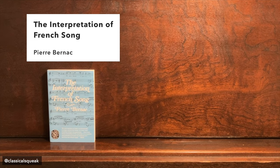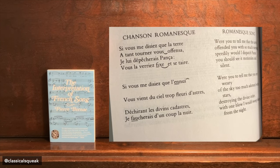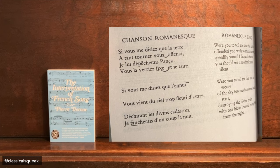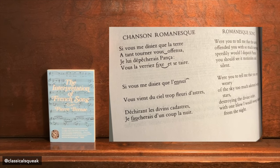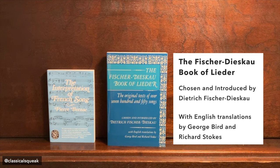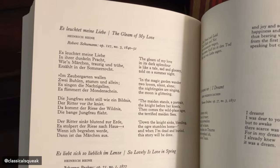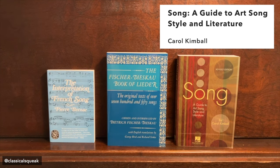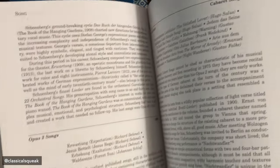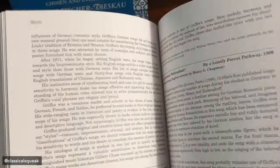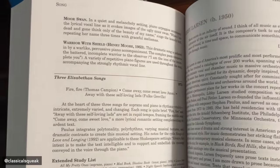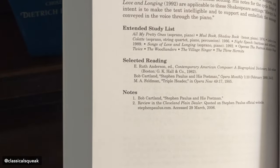The Interpretation of French Song by Pierre Bernac has summary texts and translations. What I quite liked is the liaisons are written in — syllables that might need more emphasis are underlined, and reminders about breaking from certain punctuation. All of it is notated so you can reference it. If you're looking for Lieder translations, there's the Fischer-Dieskau Book of Lieder, with German text translated to English. Last of this set is Song: A Guide to Art Song Style and Literature. It gives a survey of art song literature with an extended study list, selected reading, and notes for each section or composer — a really useful resource if you've ever had to write program notes for art song.